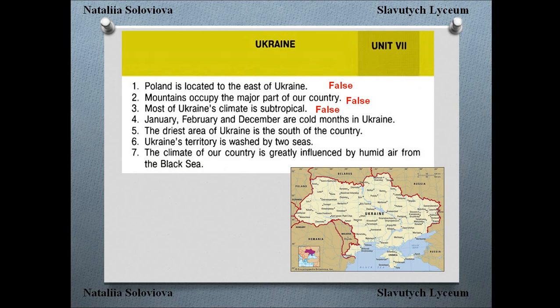'January, February, and December are cold months in Ukraine.' December, January, and February are winter months, so it is usually cold then — that is true. 'The driest area of Ukraine is the south of the country' — the south is here on the map, so the driest part is there — that is true. 'Ukraine's territory is washed by two seas.' You can see the Sea of Azov and the Black Sea — there are two seas — so that is true.